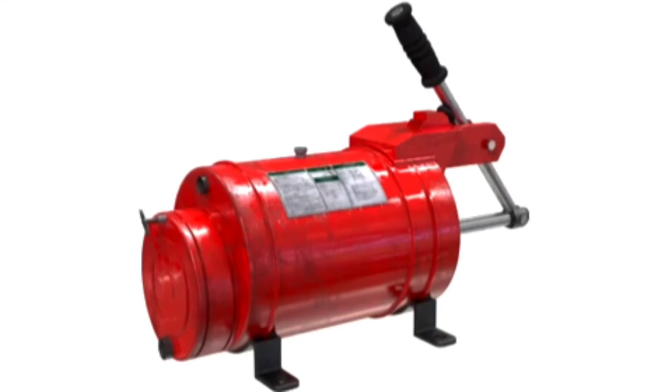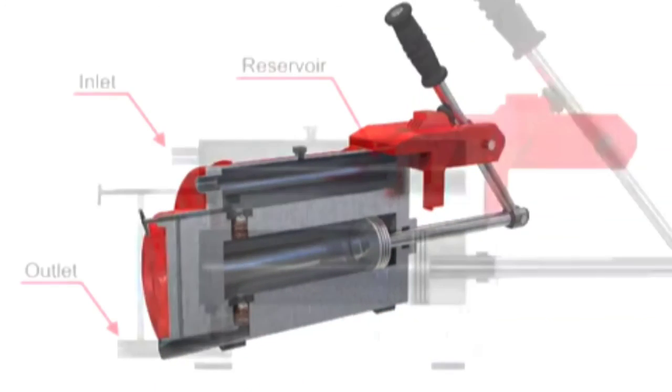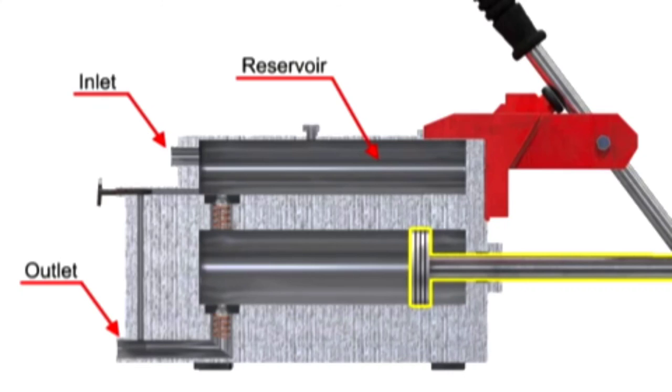Hand pumps are used when a source of power is not available or where the extra expense of a power pump isn't warranted. For example, they are used on shop presses and other portable equipment, serve as standby pumps, and serve as sources of emergency power. Hand pumps are always of piston type and are usually constructed with a piston working between two check valves.